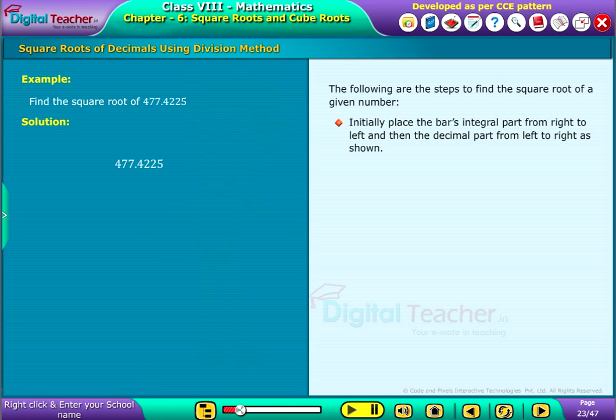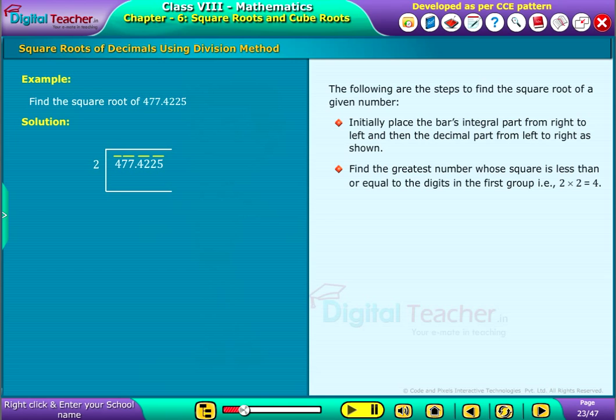Initially, place the bar's integral part from right to left and then the decimal part from left to right as shown. Find the greatest number whose square is less than or equal to the digits in the first group. That is, 2 into 2 is equal to 4.